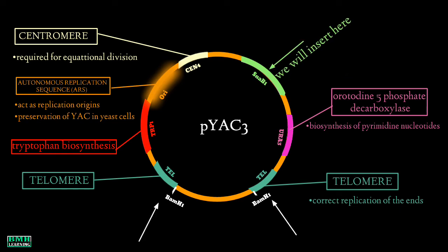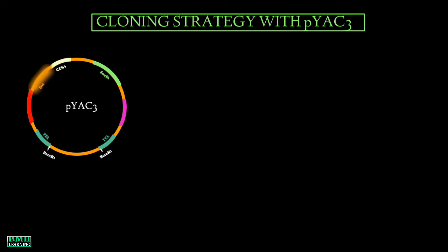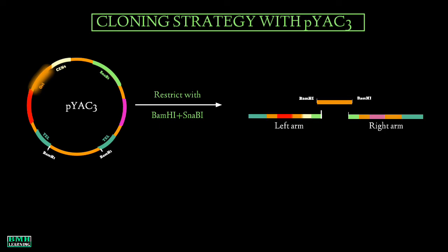The vector also has many restriction enzyme sites so that it can be cleaved for DNA insert. For cloning using the pYAC3 vector, the vector is first restricted with a combination of BamHI and SnaBI. This treatment cuts the molecule into three fragments. One fragment — flanked by BamHI on both sides — is useless and is discarded.